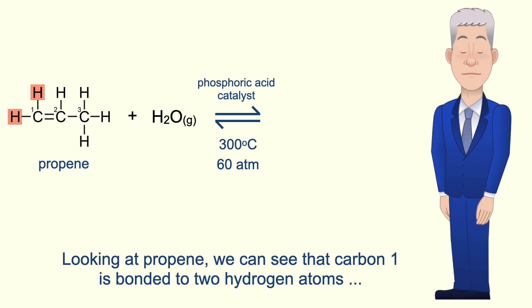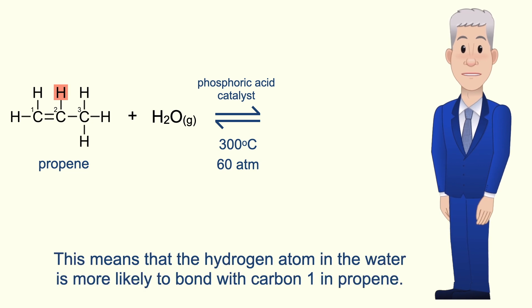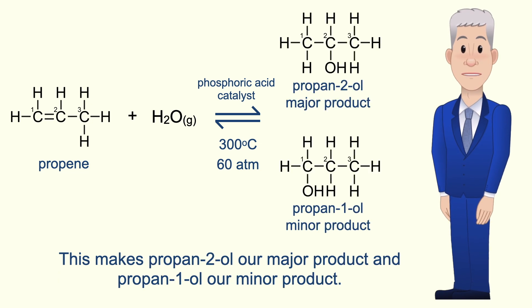Looking at propene we can see that carbon 1 is bonded to two hydrogen atoms whereas carbon 2 is only bonded to one hydrogen atom. So the hydrogen atom in the water is more likely to bond with carbon 1 in propene. This makes propane 2-ol our major product and propane 1-ol our minor product.